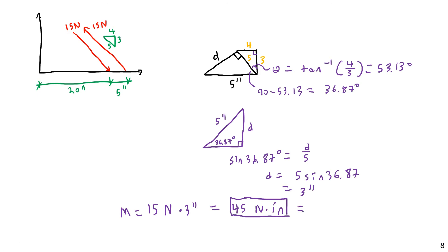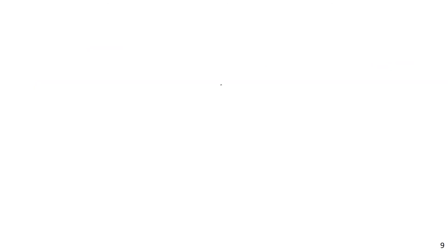That is the basic idea for simple 2D scalar systems. All you really have to do is find the perpendicular distance between the forces, which is either given directly or you can work out with some basic trigonometry. Sometimes you have to work through the trig carefully if things are at odd angles, but really it's not too bad. Now let's look at the 3D vector approach.